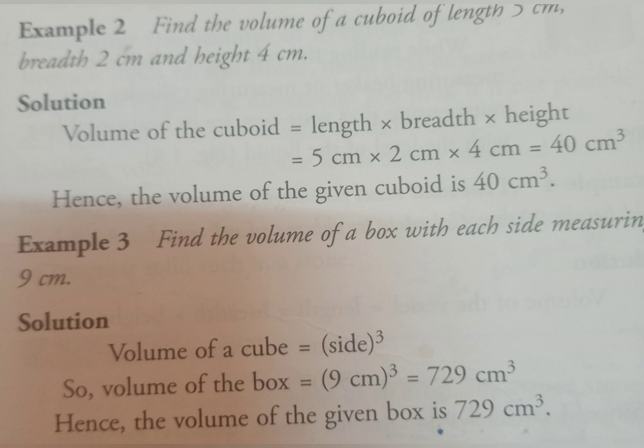Now second example. Find the volume of a box where each side measures 9 cm. The box is a cube, which means all sides are equal. Length, breadth, and height are all 9 cm. So volume of the cube equals side cube, which means 9 into 9 into 9 equals 729 cm cube. In this way we can calculate the volume of a cube.